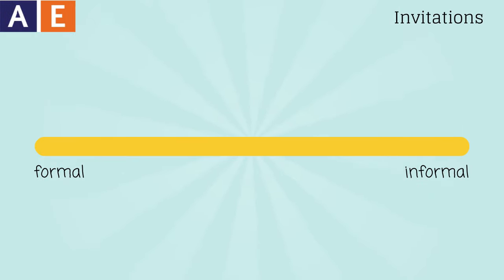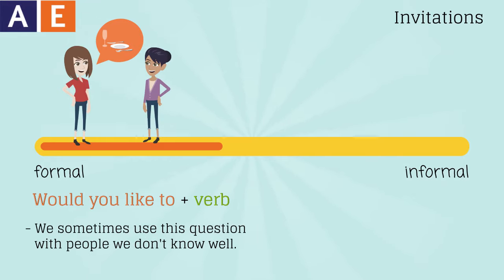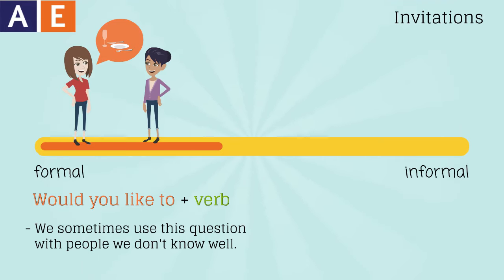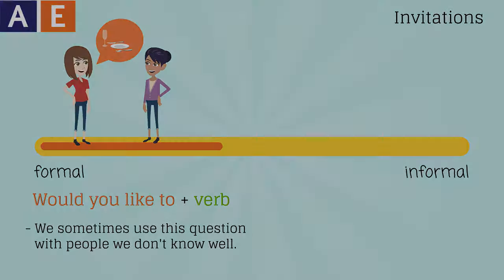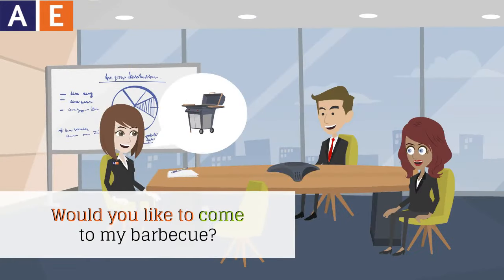Here are three ways to make an invitation in American English. A formal way is 'Would you like to' plus a verb. We sometimes use this question with people we don't know well. In these cases, we often try to be more polite than we would be with a close friend or relative. For example: 'Would you like to go to the museum with me?' 'Would you like to come to my barbecue?'